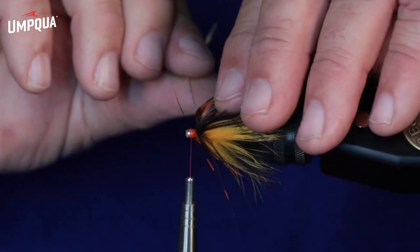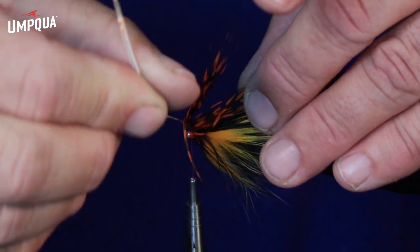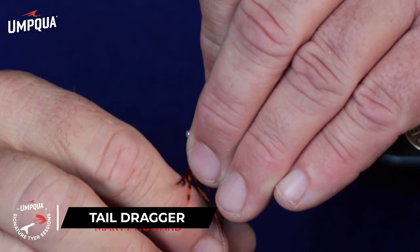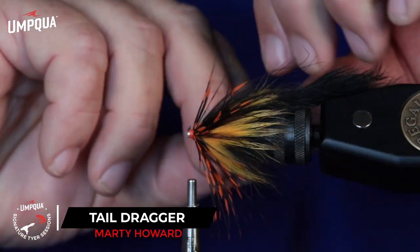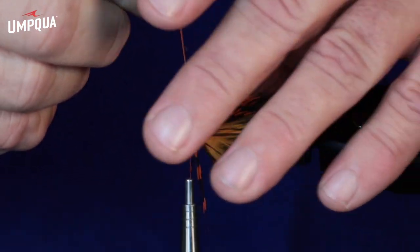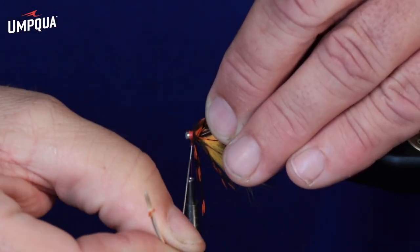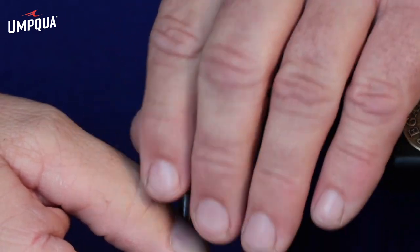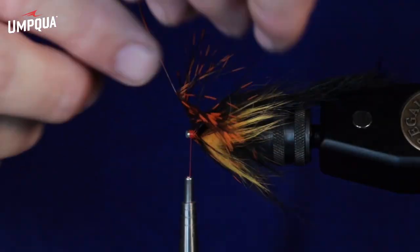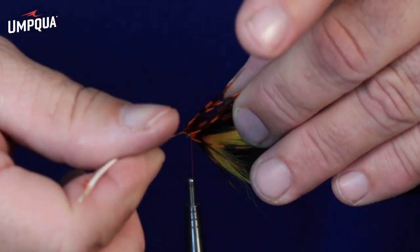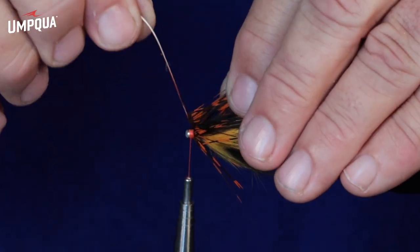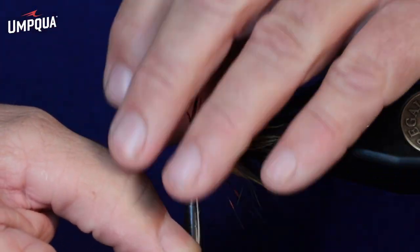And then just continue to work with that stem, rotating it into position. And if it doesn't look right, you can just stop and start all over. There's no pressure here. If you're tying a tube fly, just work until it looks right.